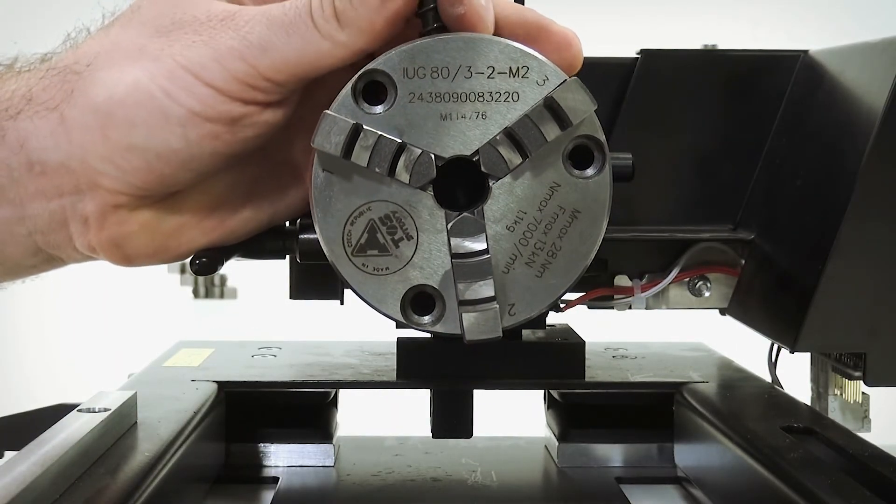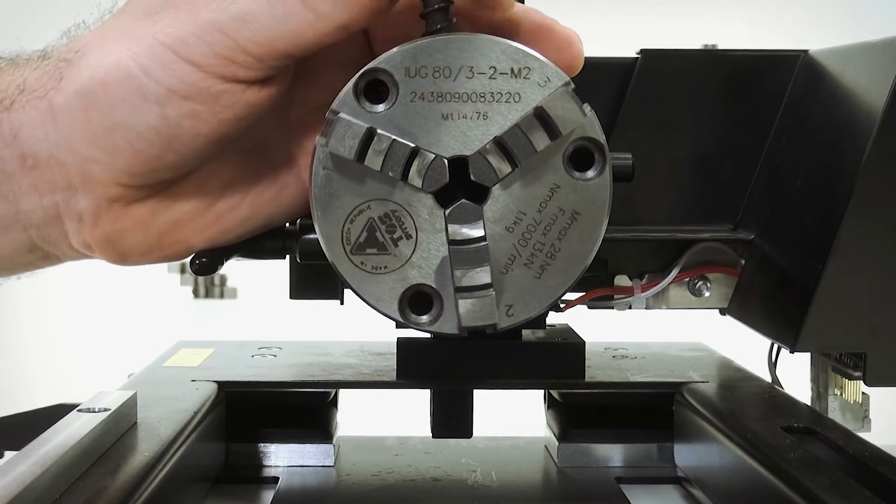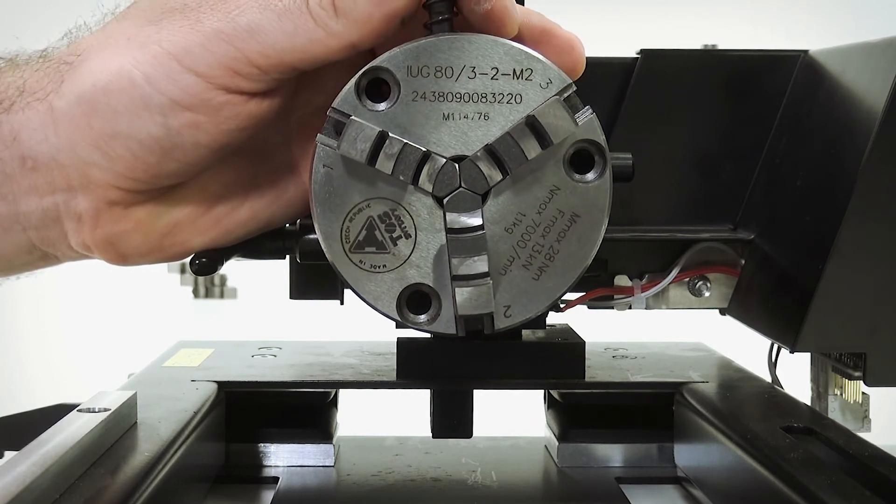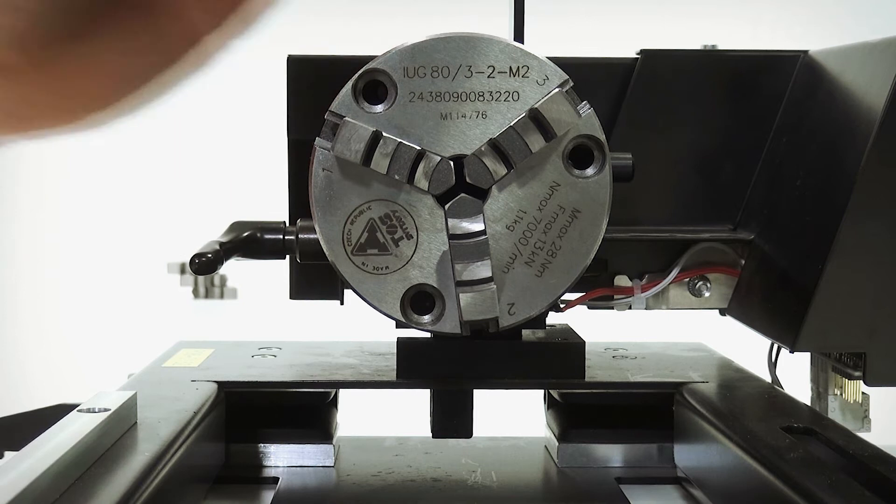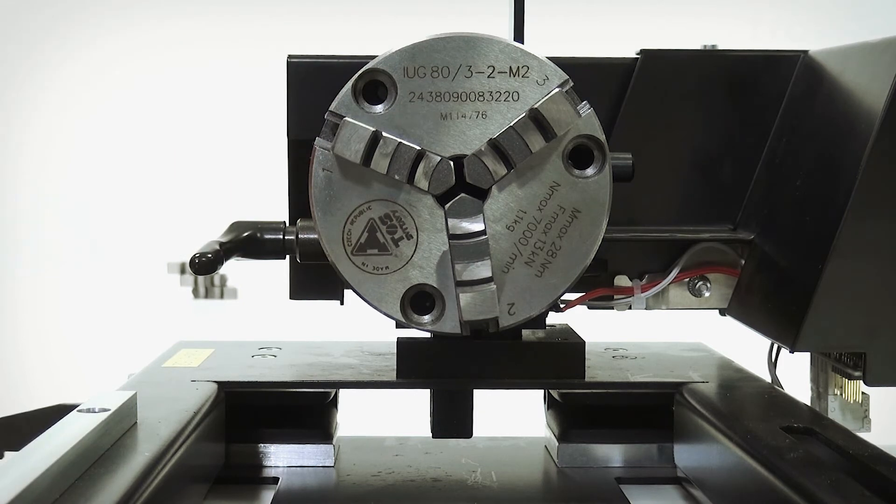When all three jaws have been placed onto the chuck, you can use the tool and then observe that all jaws are moving inwards. If one or more jaws are not moving inwards, you will have to repeat this starting with the first jaw.